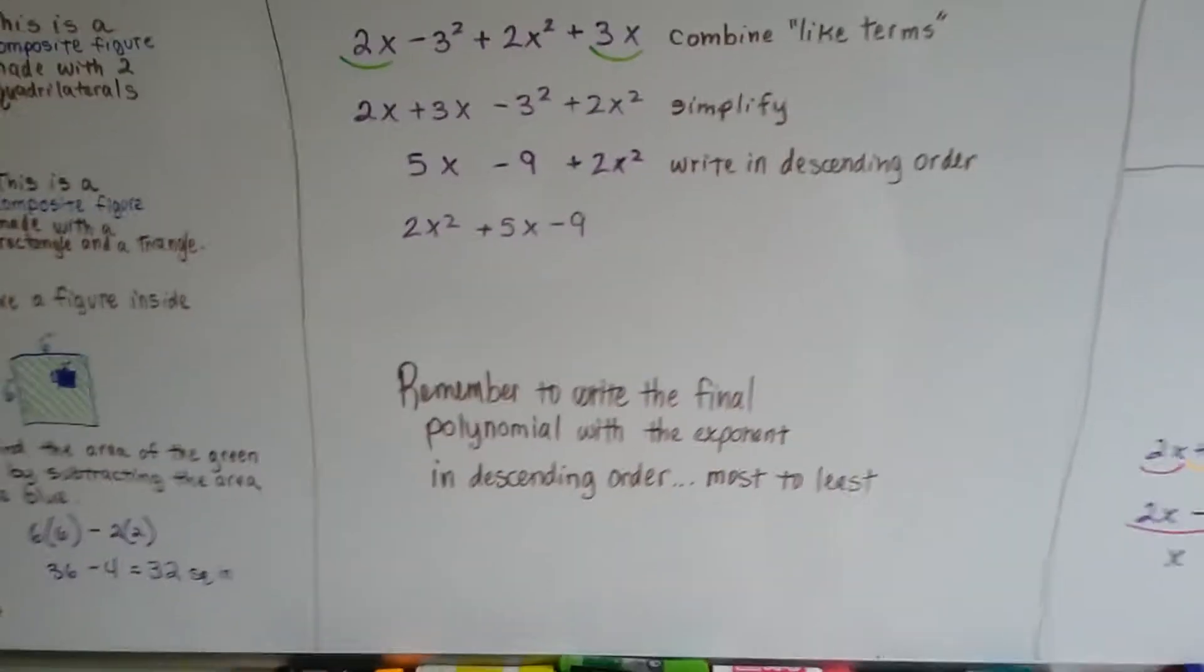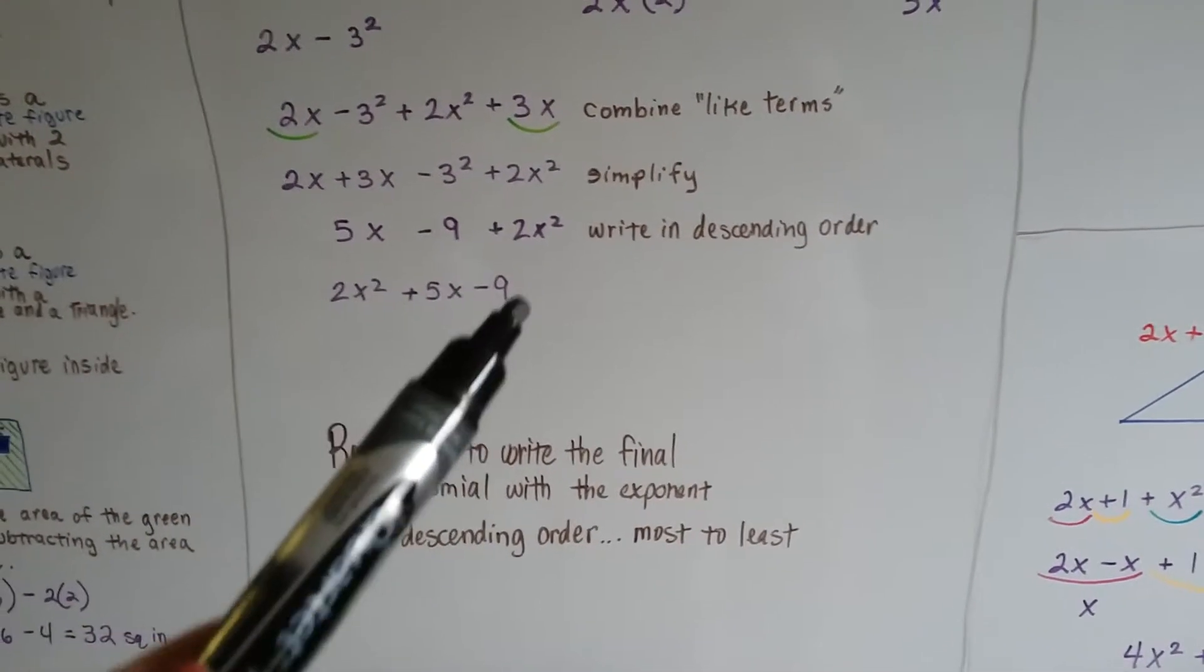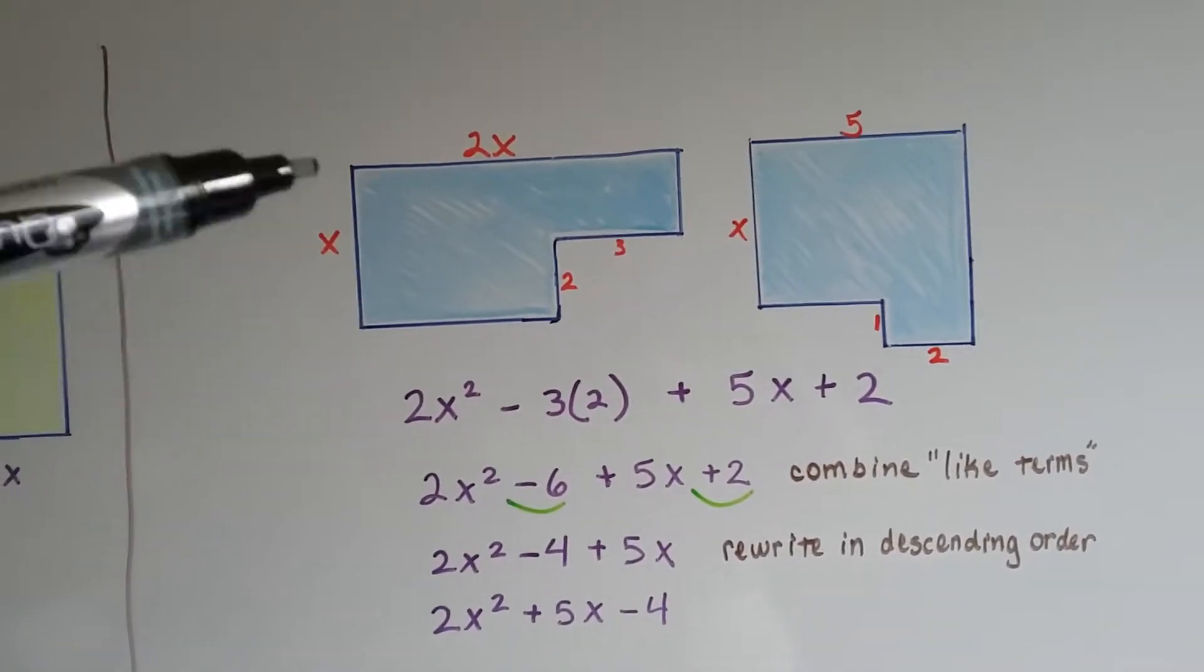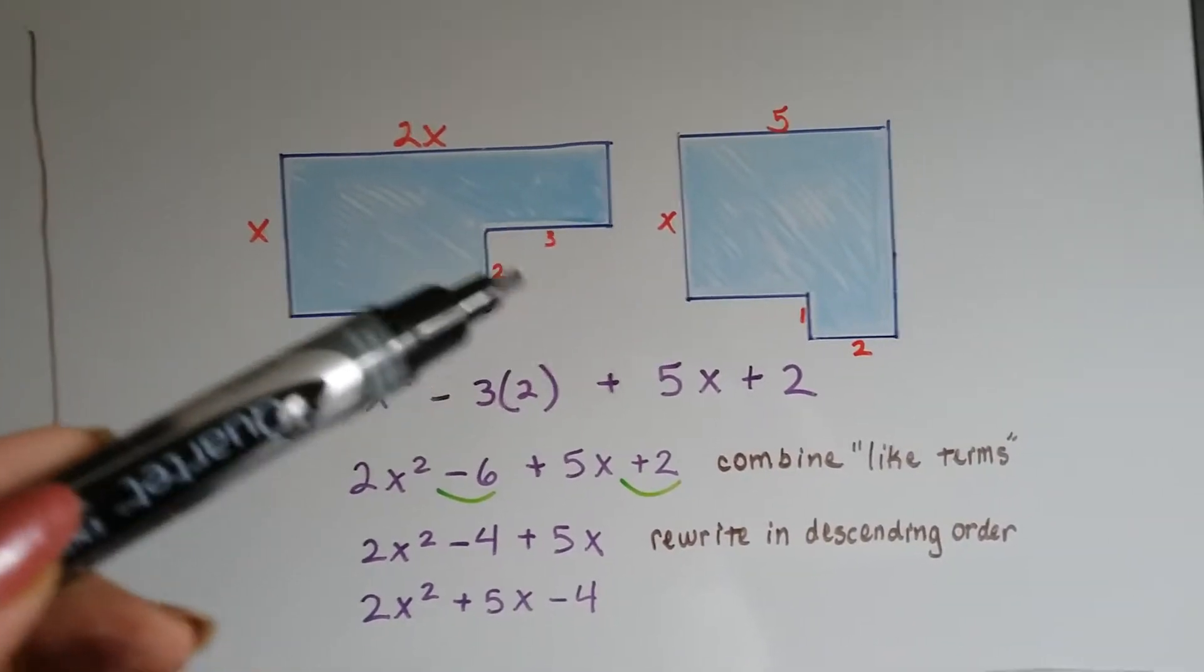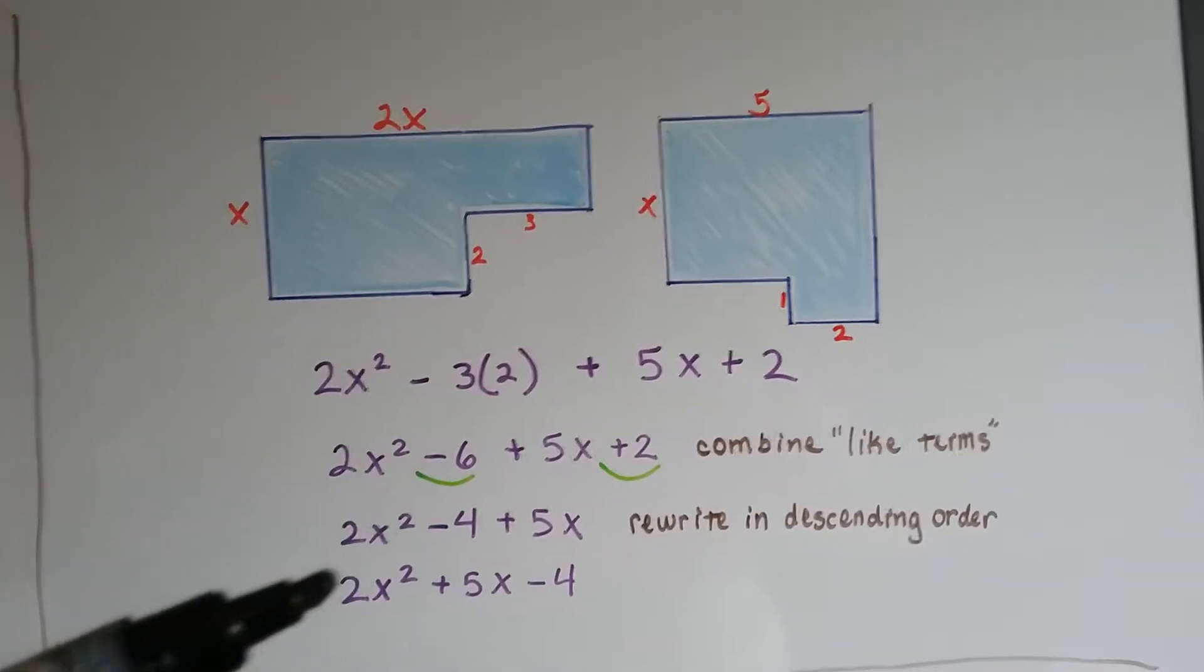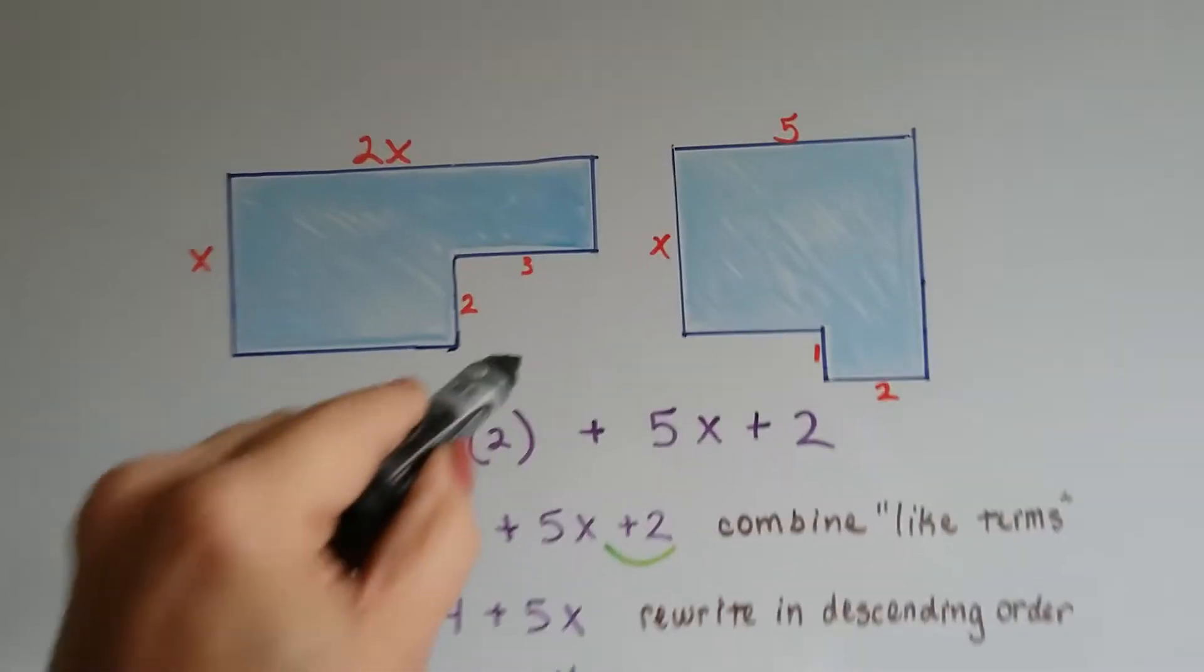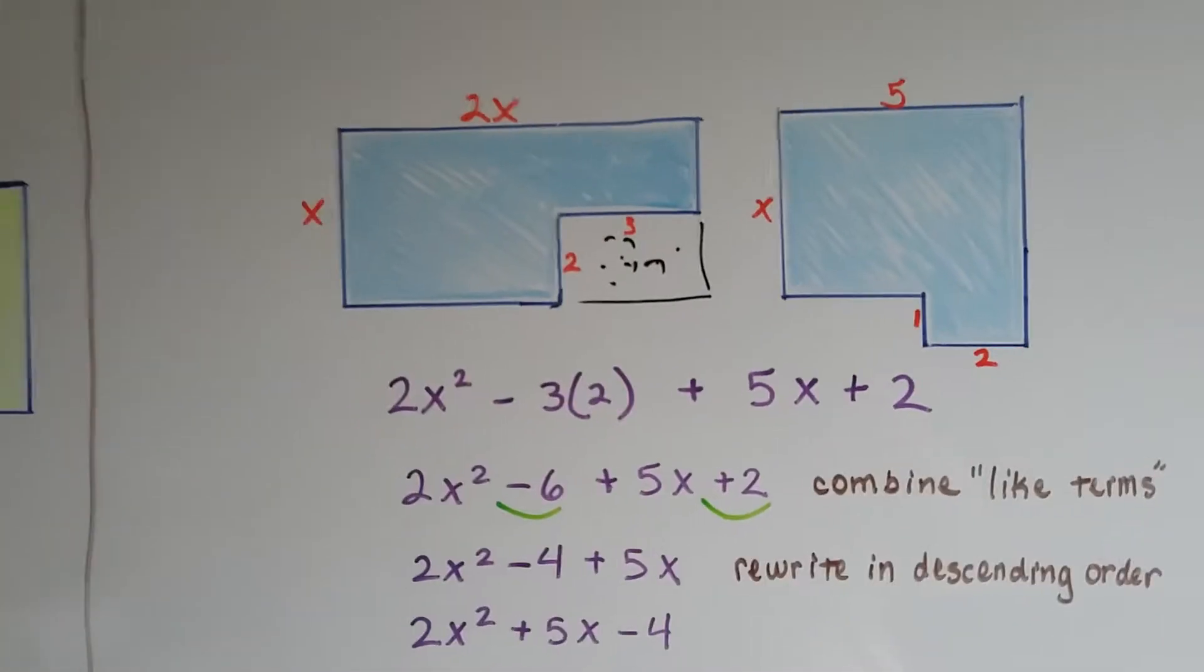Remember to write the final polynomial with the exponent in descending order from most to least. Let's take a look at these. We can see that this is 2x across and x for a height. And to find the area we do length times width, right? But it's missing this section, and that's a section that's 2 times 3. That 2 times 3 would be a 6. And we need to take it away from 2x by x. We wouldn't have to take it away if the whole thing was filled in here, but it's not, so we need to take that away.